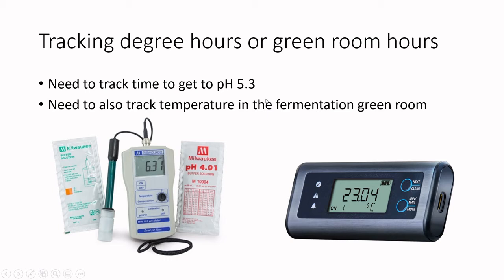You also need to track the temperature in your fermentation green room. Data loggers that track time and temperature are also becoming extremely affordable and common. Some commercial fermentation chambers have integrated PLC modules, while others use add-on data logging. You may need to go in manually every few hours to check pH until you get below 5.3. I highly recommend getting the proper equipment and following standard operating procedures for each device.